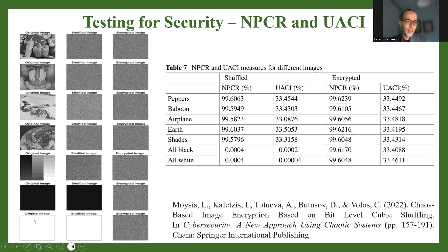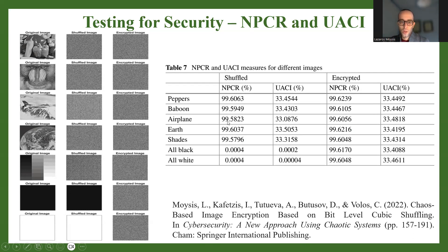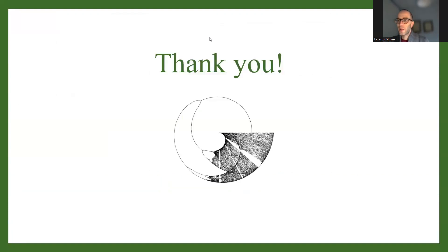We have a collection of images — we shuffle them and then encrypt them, and the encrypted images successfully pass both tests. Note that for all-black and all-white images, the shuffled image is exactly the same, as discussed in a previous video. In those cases, the NPCR and UACI tests fail for the shuffled images, but after full encryption they return close to optimal values. Making the encryption design plaintext-dependent is crucial to resist differential attacks. MATLAB codes to compute NPCR and UACI tests yourself will be available in the video description.